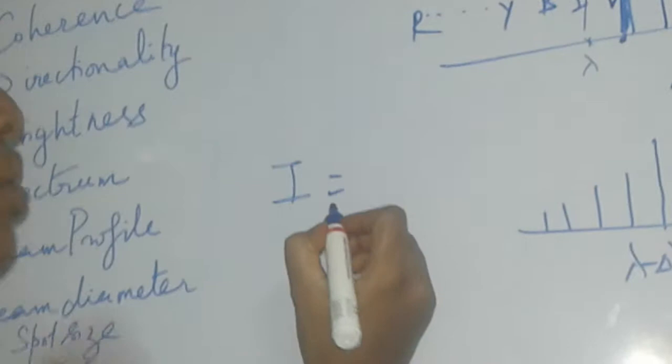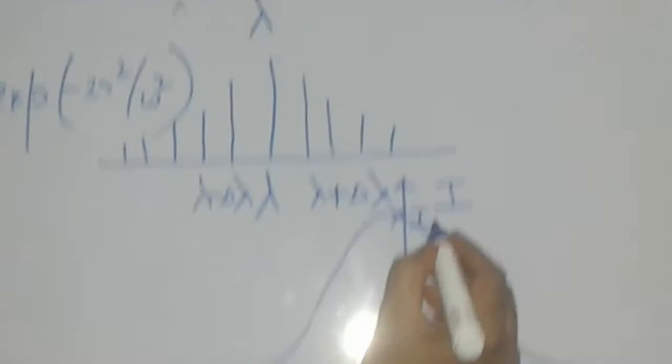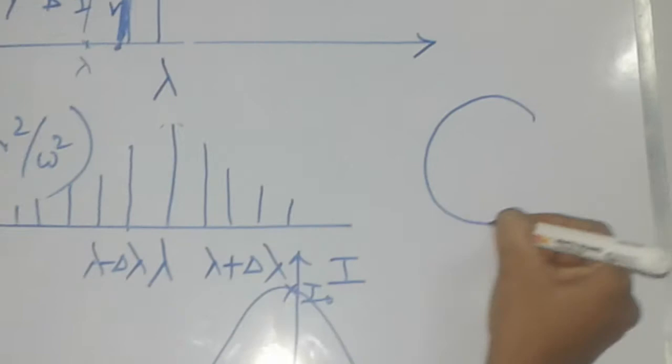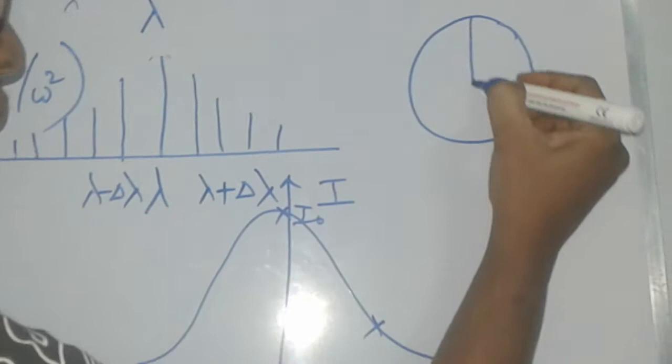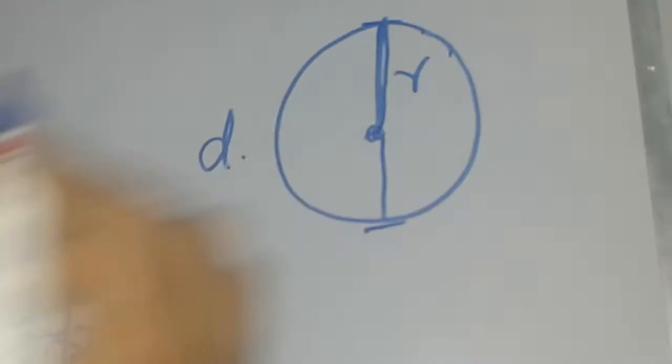The intensity formula is: I = I₀ · exp(−2r²/w²). Here I₀ is the peak intensity. The variable r is the radius — the distance from the center of the laser beam — and w is the beam size or beam width. This is the center of the laser beam, r is the radius, and d is the diameter.